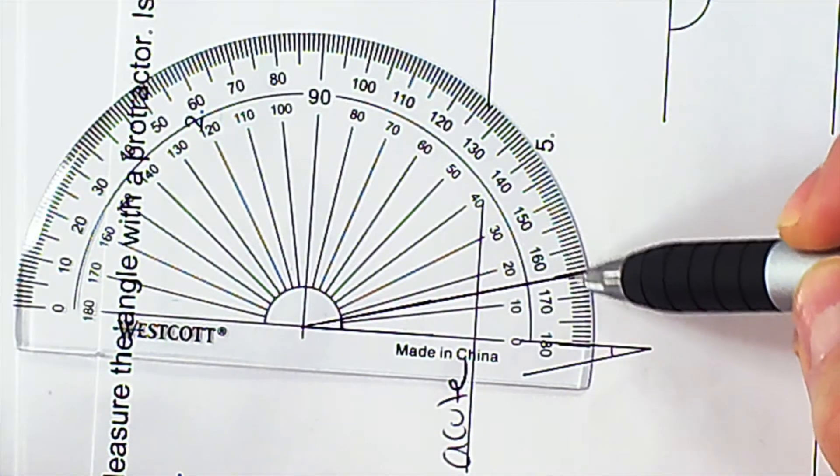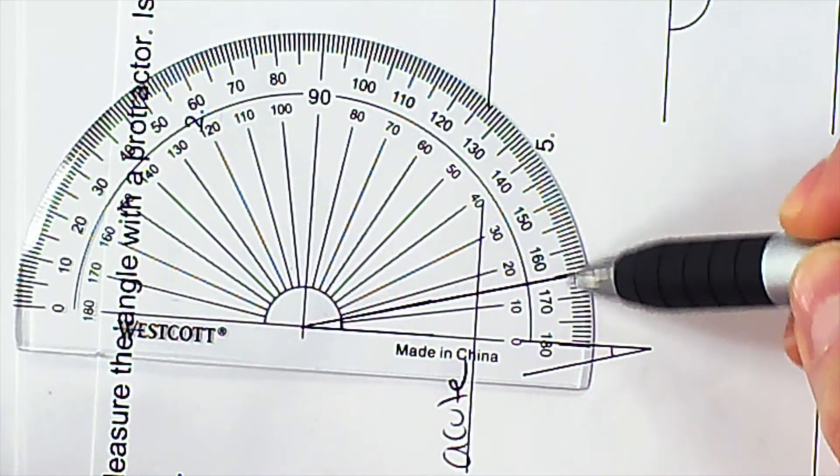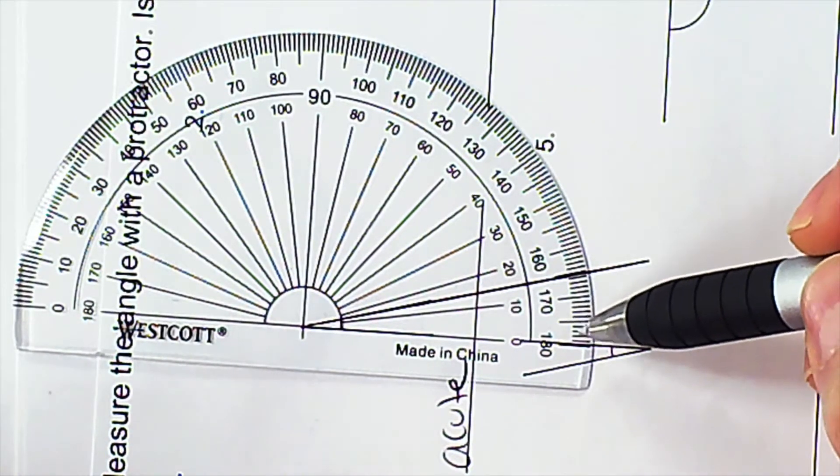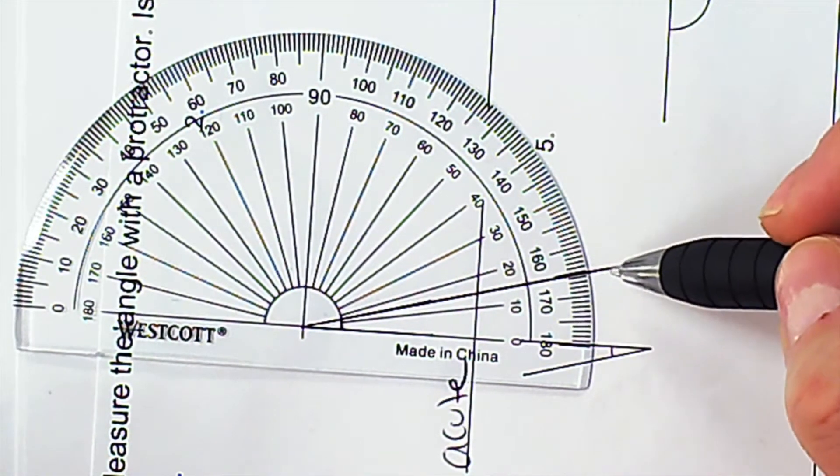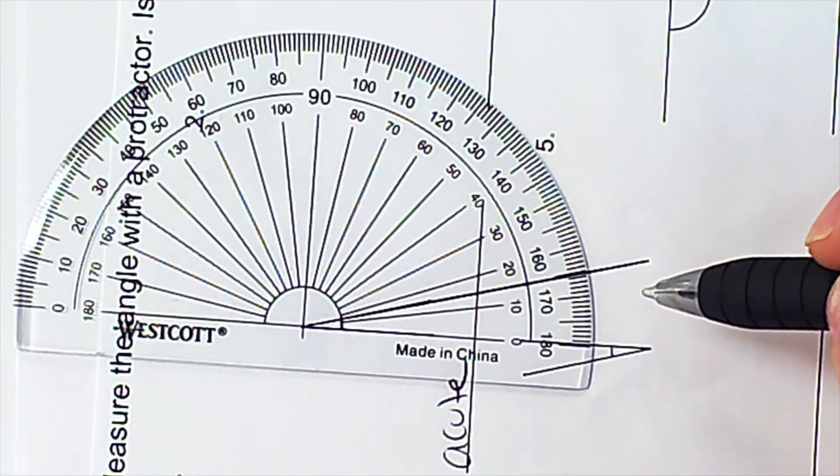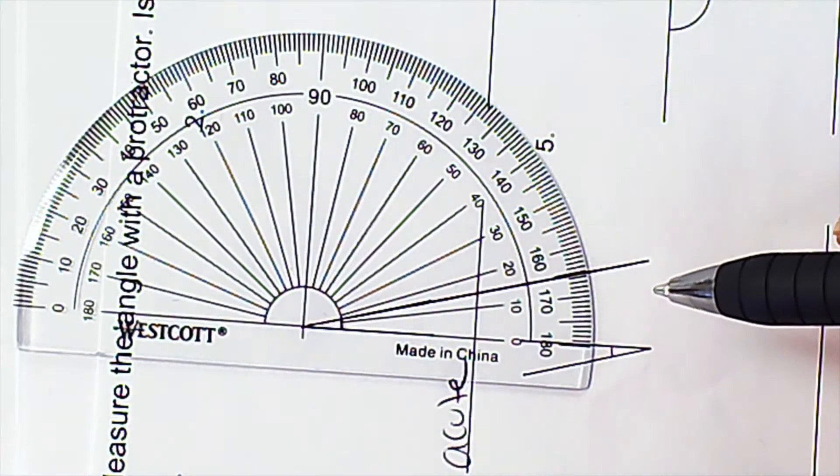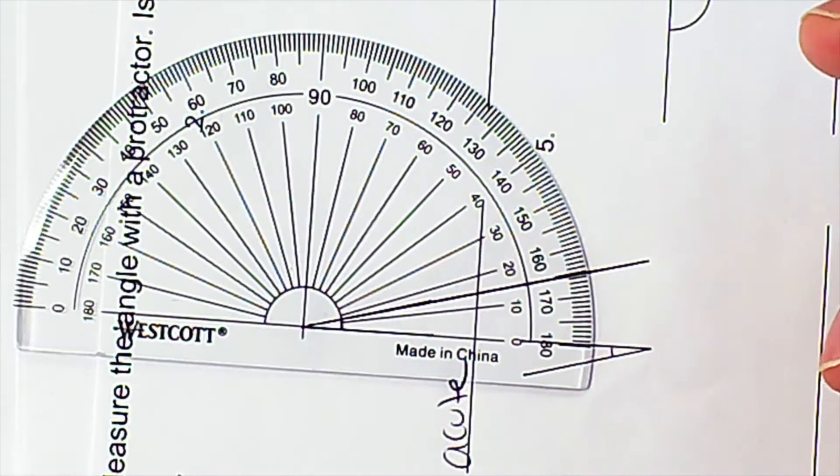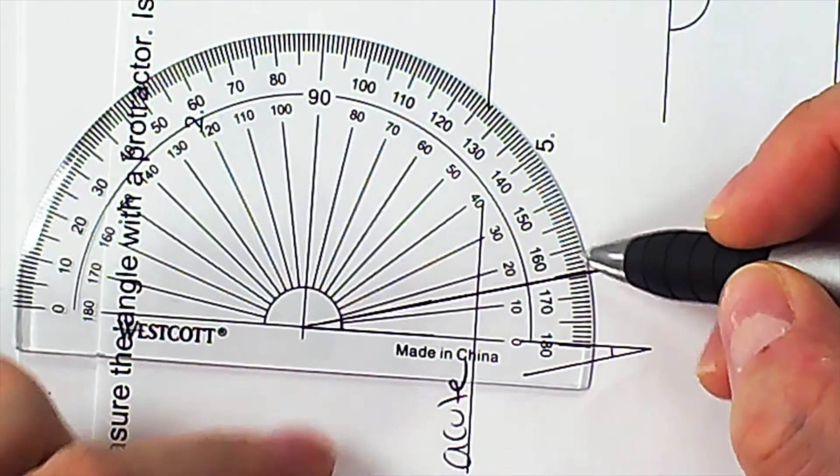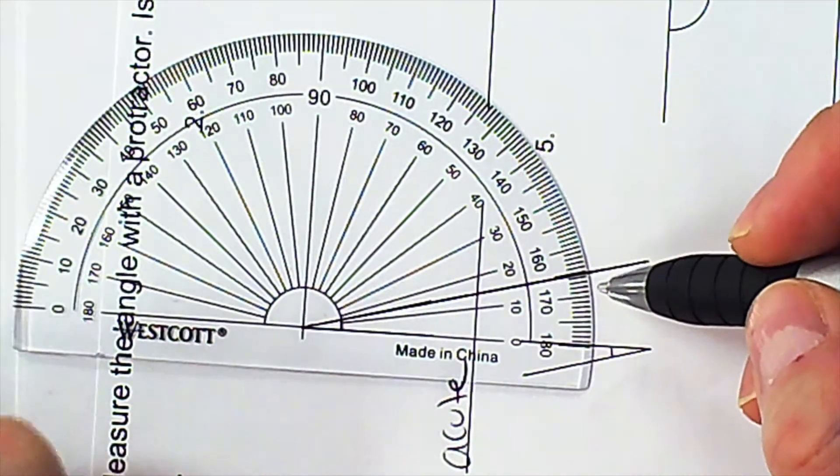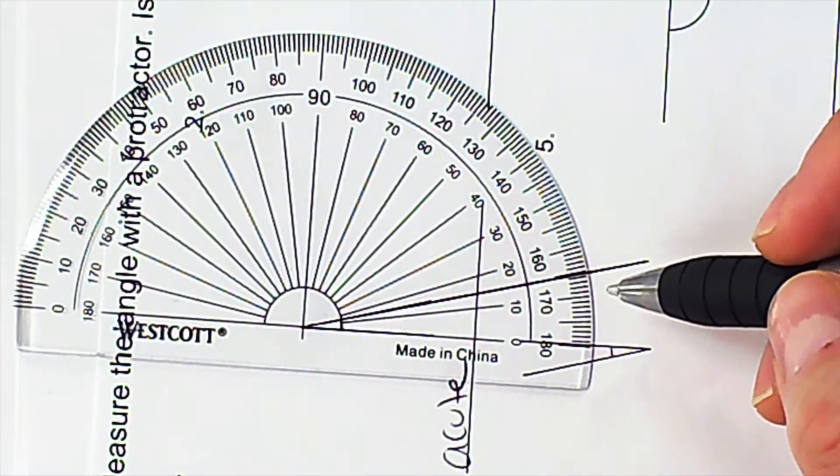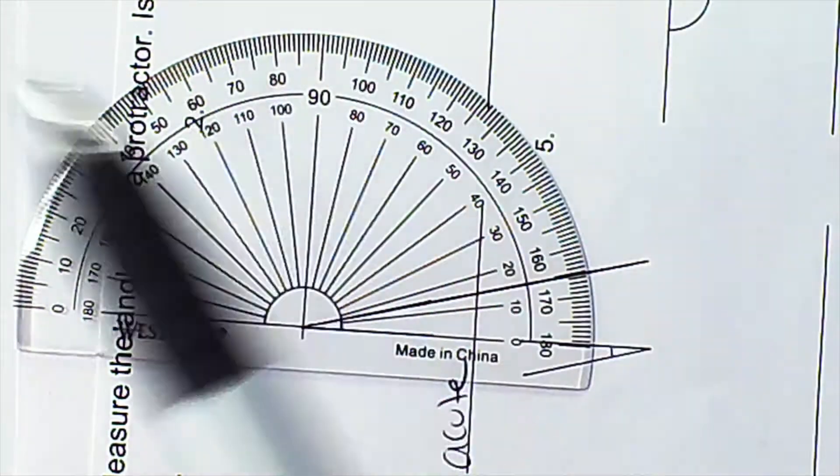This is 15 degrees. What mistake might someone make measuring this angle? They would say 165 because they see 165 here. But we know 165 degrees should be an obtuse angle which is a big angle, so that should eliminate the confusion. So 15 degrees.